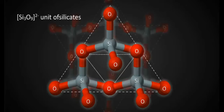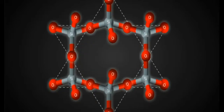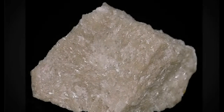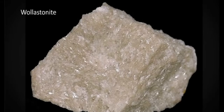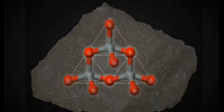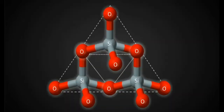There are two types of cyclic ions. The first is the Si₃O₉⁶⁻ ion, as shown in the animation. The second is the cyclic Si₆O₁₈¹²⁻ ion, also shown in the animation.